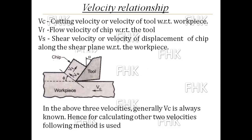In the figure in front of you, the tool is cutting the workpiece material and that workpiece material is moving in the form of a chip. The first velocity is VC — V suffix C — that is cutting velocity, or the velocity of tool with respect to workpiece.